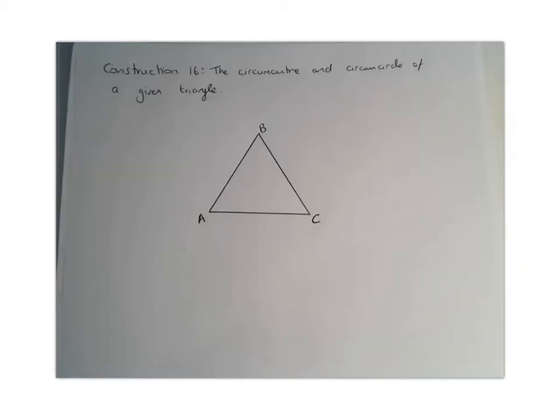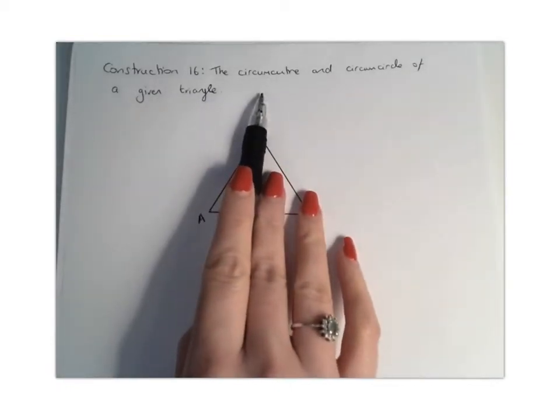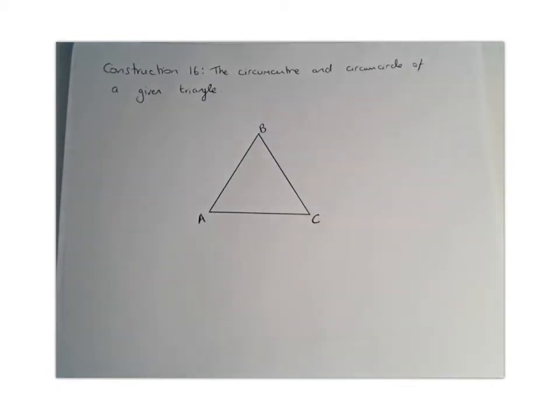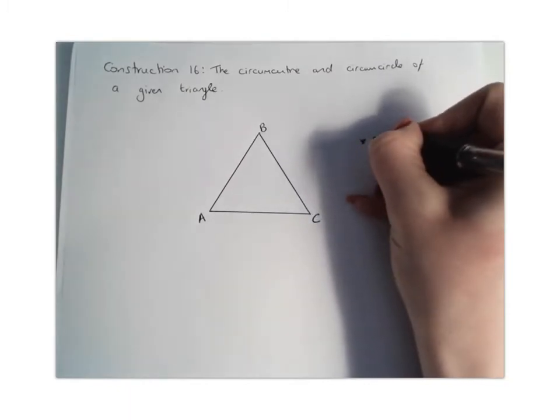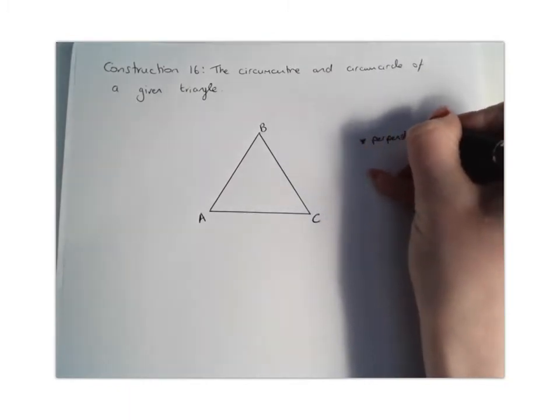For Construction 16, we want to construct the circumcircle of a given triangle, so we need to locate the circumcentre, which we can then use to work out the circumcircle. The most important thing to remember is that we are going to be finding perpendicular bisectors of the sides.